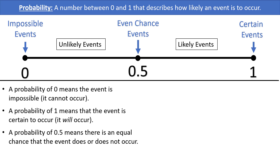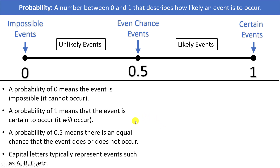Since we're always relating probability to events that either can or cannot happen, we often abbreviate those events using capital letters. Capital letters such as A, B, or C represent events. For example, A might equal the event that you flip heads on a coin, and then you would find the probability of that event.